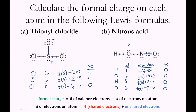Compare that to thionyl chloride, where oxygen has a negative formal charge and sulfur has a positive formal charge. Both thionyl chloride and nitrous acid are neutral molecules, so the sum of the formal charges must equal zero. In thionyl chloride, we have one minus and one plus, giving us our neutral charge. In nitrous acid, when we compare the valence electrons of each atom in the neutral free-atom state to the bonded state in the molecule, we find they're identical — thus each atom has zero formal charge, and the sum equals zero.